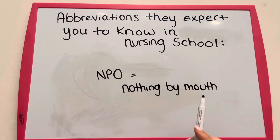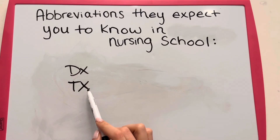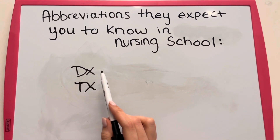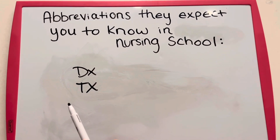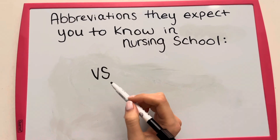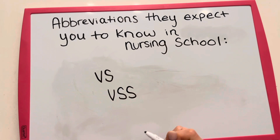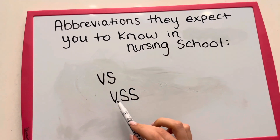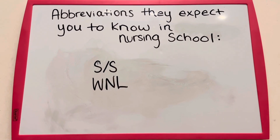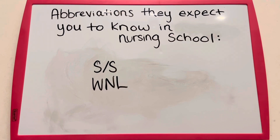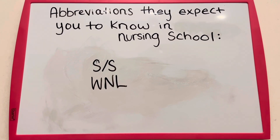NPO means nothing by mouth. If you see DX or TX, DX stands for diagnosis and TX stands for treatment. VS stands for vital signs, and VSS stands for vital signs stable. SS stands for signs and symptoms, and WNL stands for within normal limits.